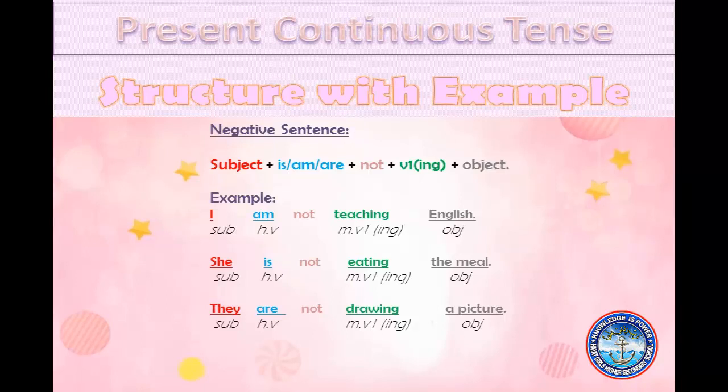She is not eating the meal. They are not drawing a picture. You see, to make these sentences negative, we just add not after the helping verb.